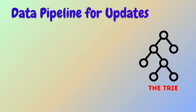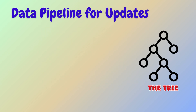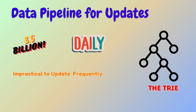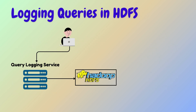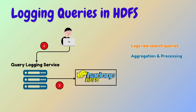Let's understand how the trie is updated using batch processing. The data pipeline for updates is designed to handle billions of searches each day, making it impractical to update the trie for every individual query in real time. Instead, batch processing is employed. The query logging service records raw search queries by invoking the log user query API and stores this data in HDFS, allowing the system to batch process data at regular intervals.